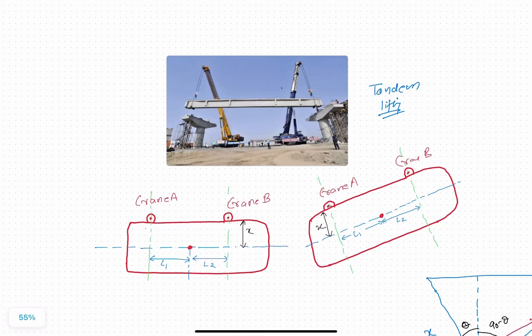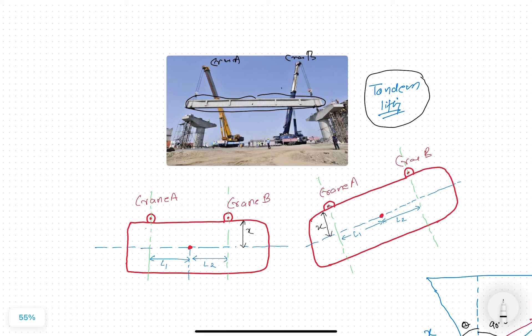Hello friends. This case is basically about tandem lifting. In tandem lifting, we are lifting an element or load using two cranes simultaneously. The element is being lifted up by two cranes: crane A and crane B.